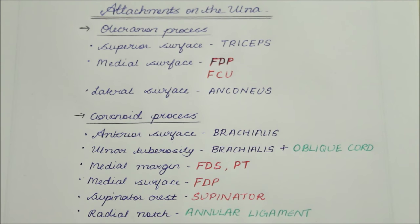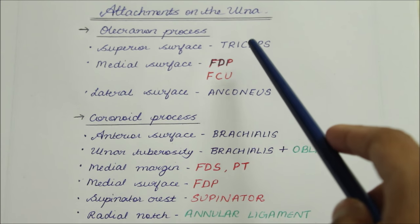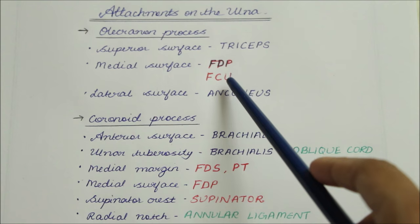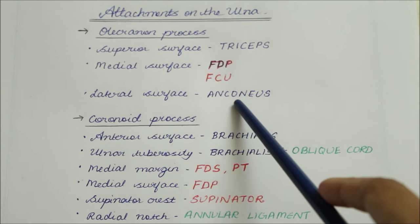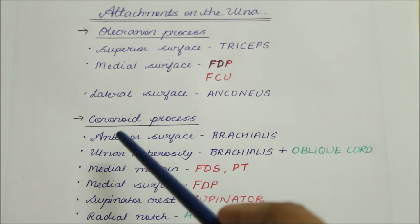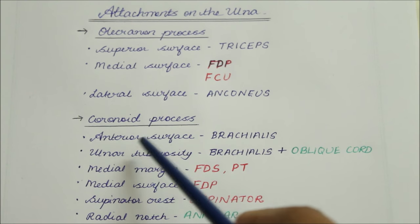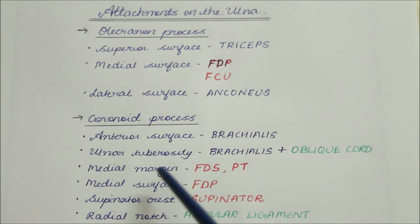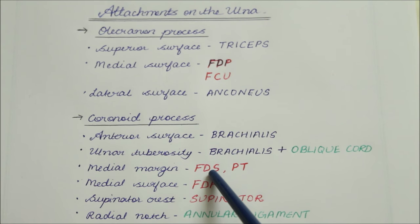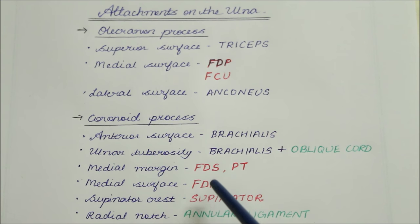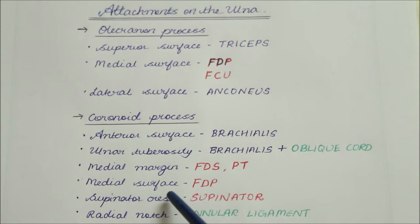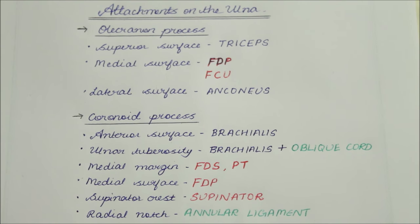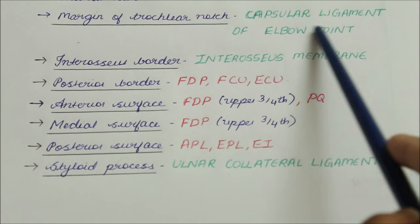Now let's summarize the attachments on the ulna. The olecranon process gives insertion to the triceps on its superior surface. The medial surface gives origin to the flexor digitorum profundus and the flexor carpi ulnaris. The lateral surface of the olecranon gives insertion to the anconeus. On the coronoid process, the anterior surface gives insertion to the brachialis. The ulnar tuberosity gives insertion to the brachialis as well as attachment to the oblique cord. The medial margin gives origin to the flexor digitorum superficialis and the pronator teres. The medial surface gives origin to the flexor digitorum profundus. The supinator crest and the area in front of it give origin to the supinator. The radial notch gives attachment to the annular ligament. The margin of the trochlear notch gives attachment to the capsular ligament of the elbow joint.